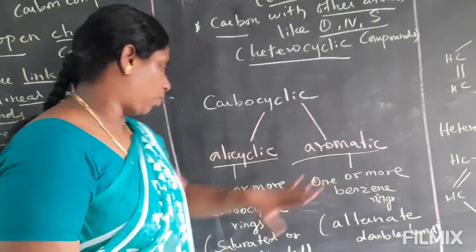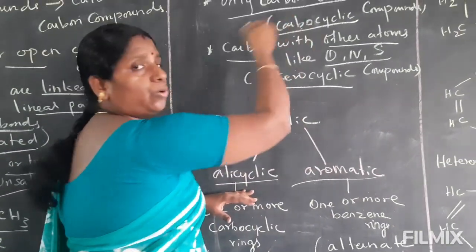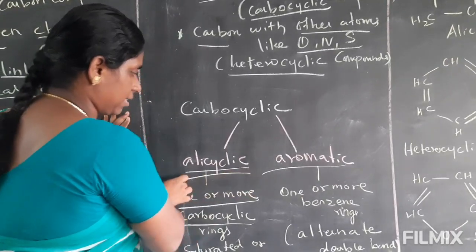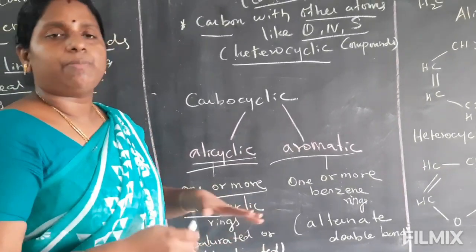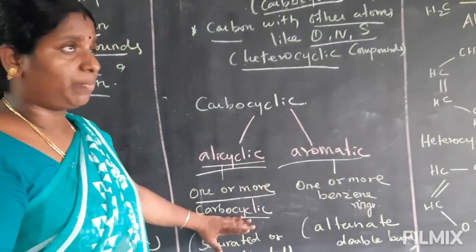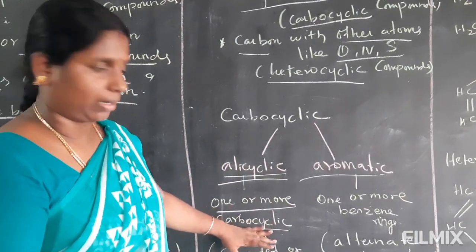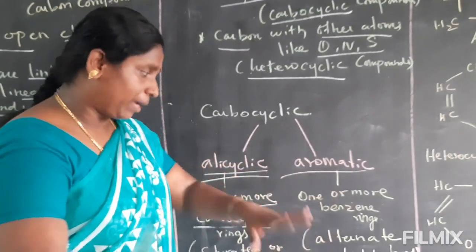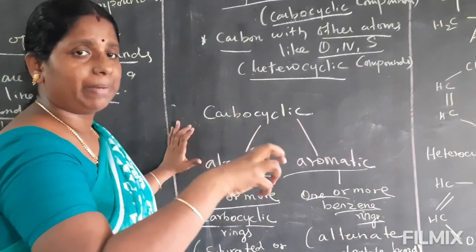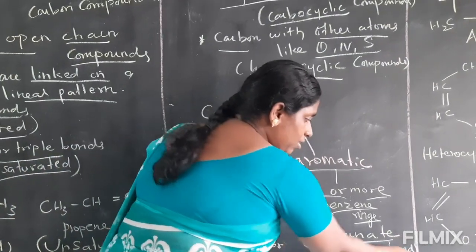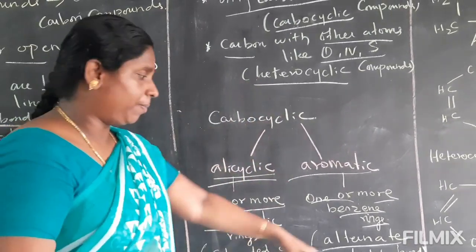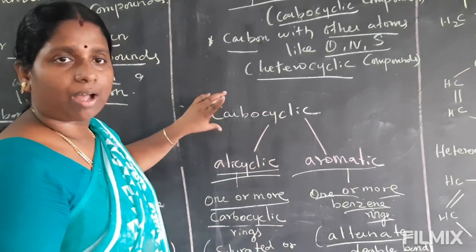Carbocyclic is of two types: alicyclic and aromatic. Alicyclic means one or two carbocyclic rings are present — it can be saturated (single bond) or unsaturated (double or triple bond). Aromatic means a closed structure with one or two benzene rings present, and alternate double bonds — one single bond, one double bond, alternating.